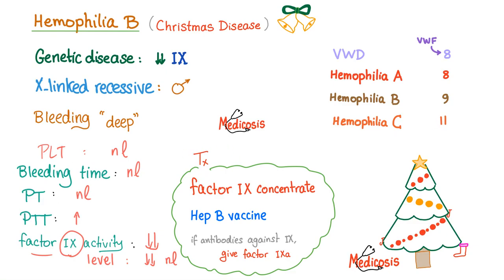Remember that von Willebrand factor helps factor VIII. Hemophilia A is factor VIII, hemophilia B is factor IX, hemophilia C is factor XI. Management of hemophilia B includes factor IX concentrate, hepatitis B vaccine, and recombinant factor IX. If the patient has an inhibitor against factor IX, give factor IXa — the active form — because giving inactive factor IX will be destroyed by the antibodies. Giving the active form may override that problem.